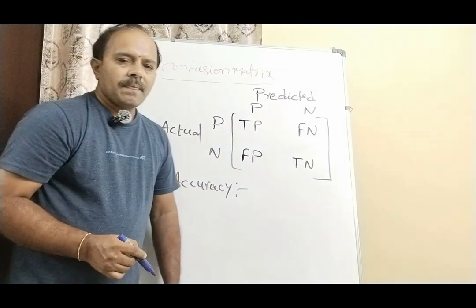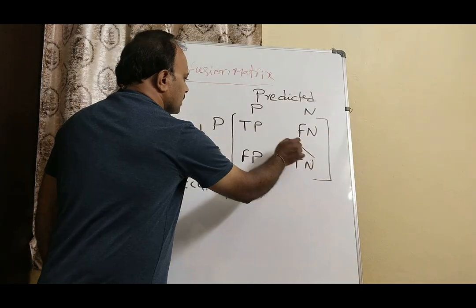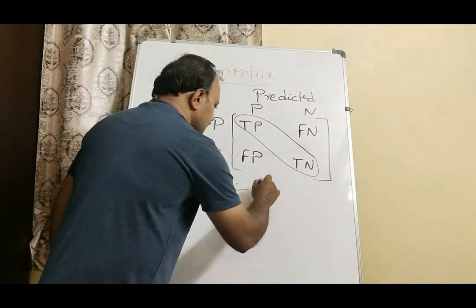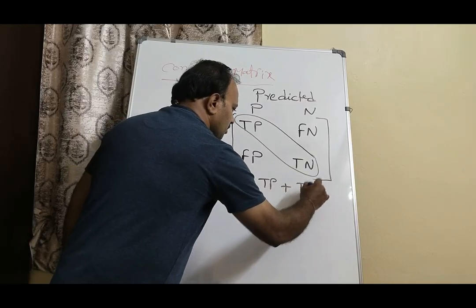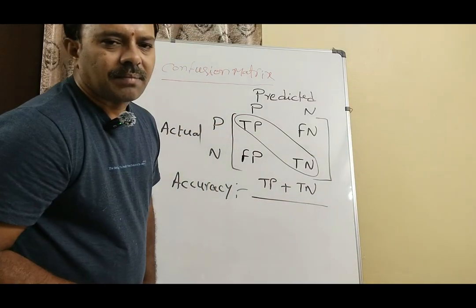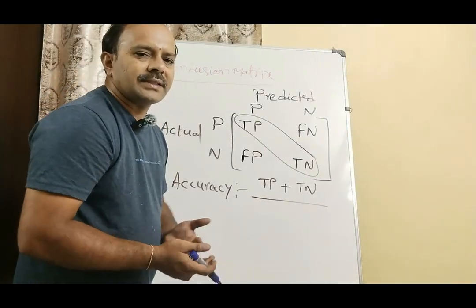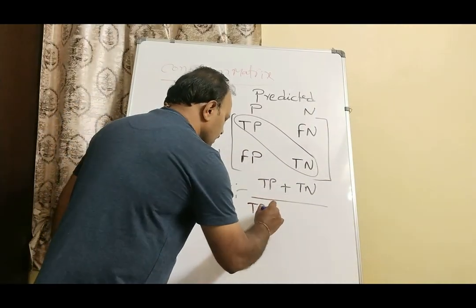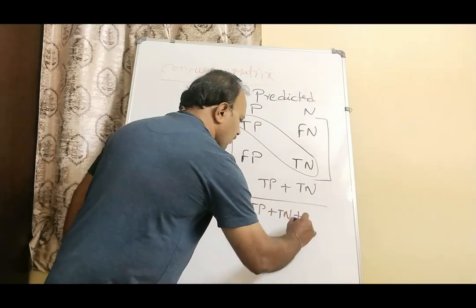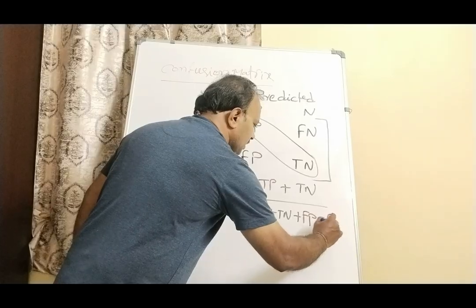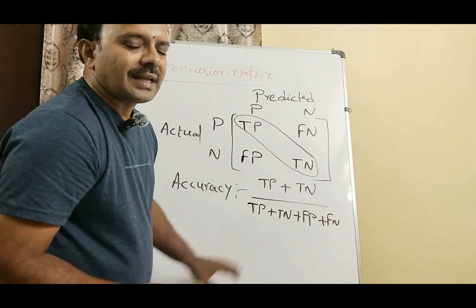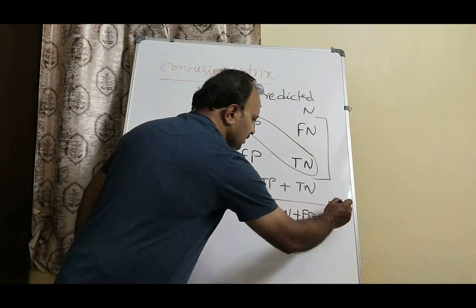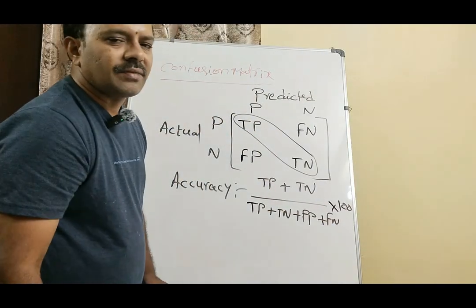To measure accuracy, always remember you need to consider true positive as well as true negative elements: (true positive + true negative) divided by the total number of samples. The total number of samples is the sum of all elements — true positive + true negative + false positive + false negative. This gives you the classification accuracy, and multiplying by 100 expresses it as a percentage.